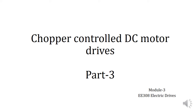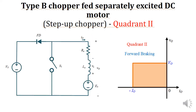This is Part 3 of chopper-controlled DC motor drives. In this lecture we will discuss the Type B chopper-fed separately excited DC motor. As we know, the Type B chopper is a step-up chopper which operates in quadrant 2.